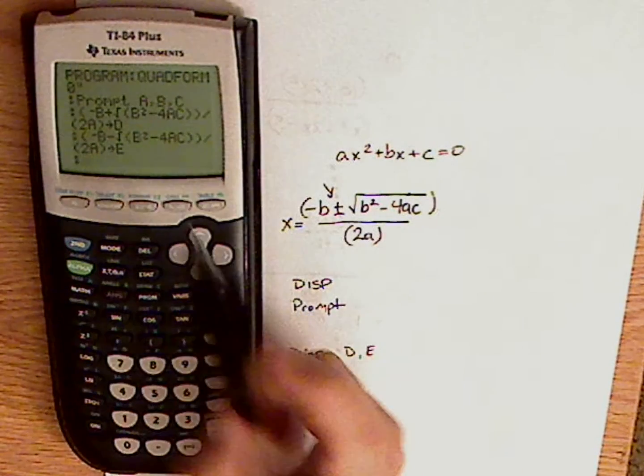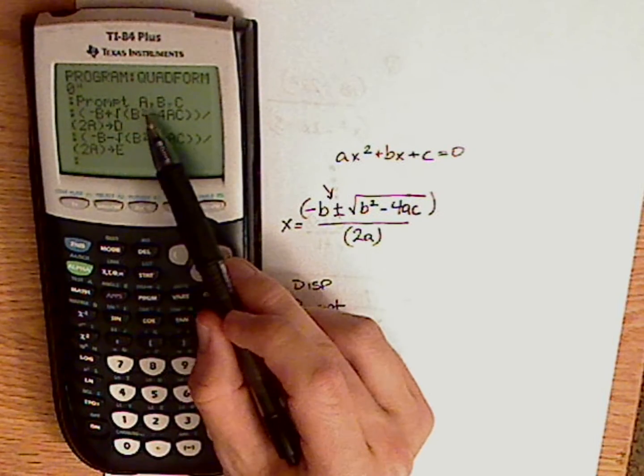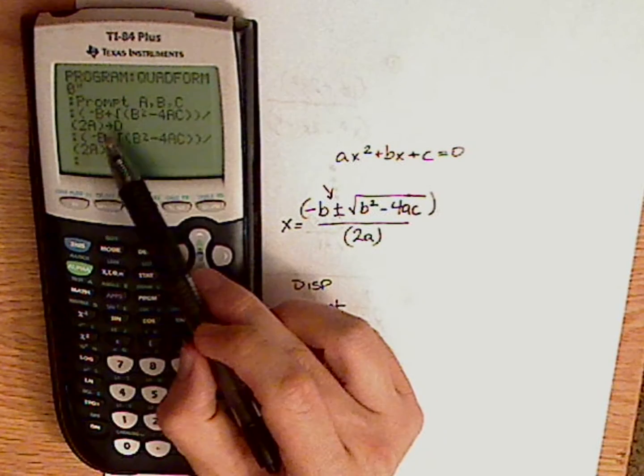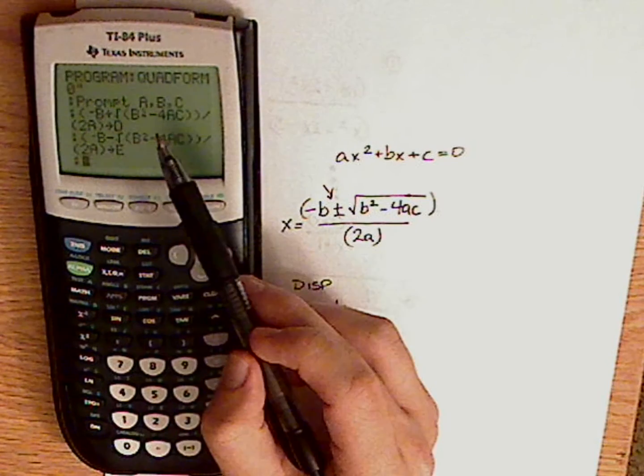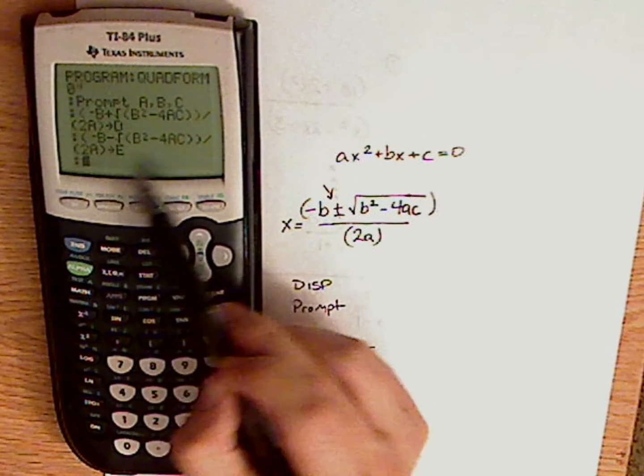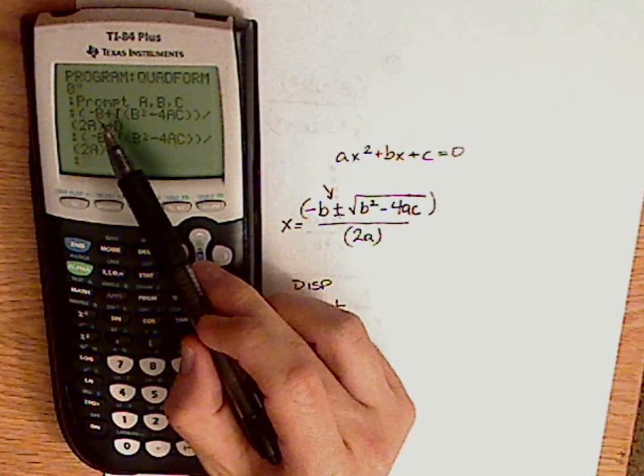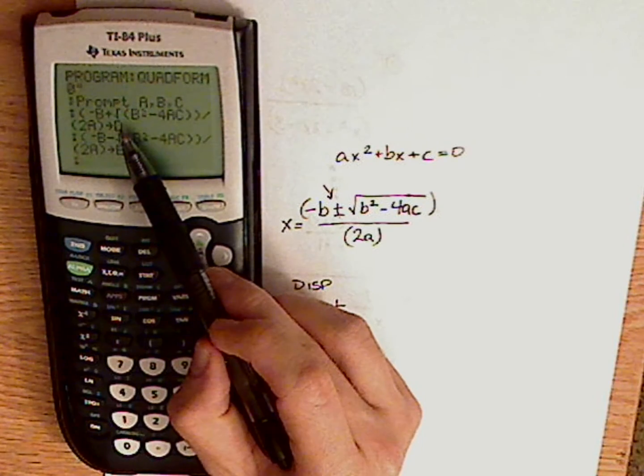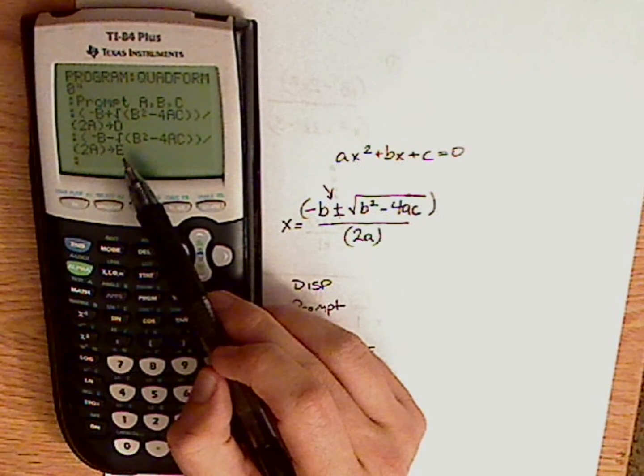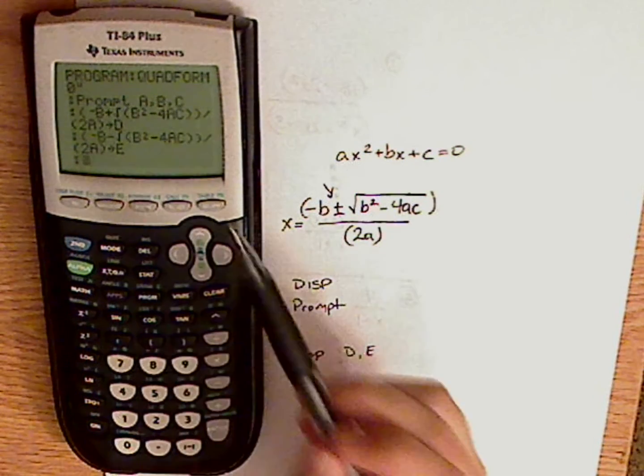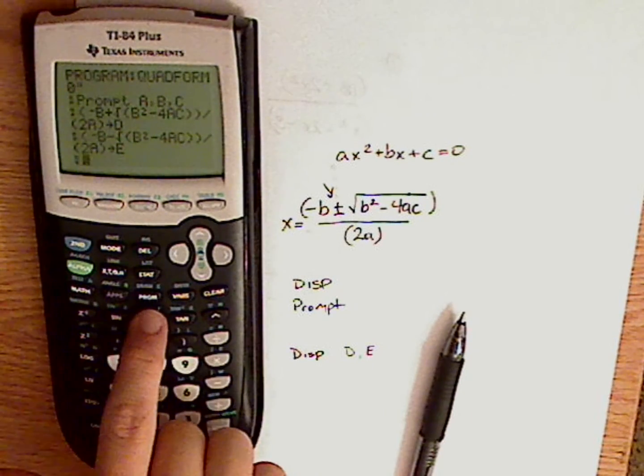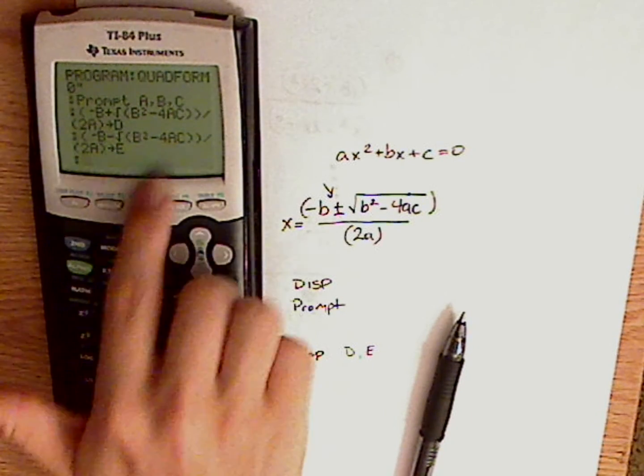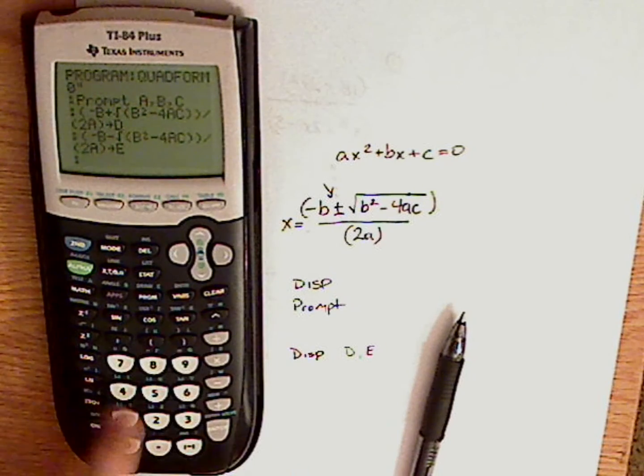Now what the program is going to do is it's going to prompt you for A, B, and C, and then you're going to tell it what A is, what B is, what C is, and then it's going to plug all those in. And it's going to store each solution as D, the first one, and then the second one as E, and then you want to display both D and E. If you don't do that, what's going to happen is it's going to store it and then you won't see anything.